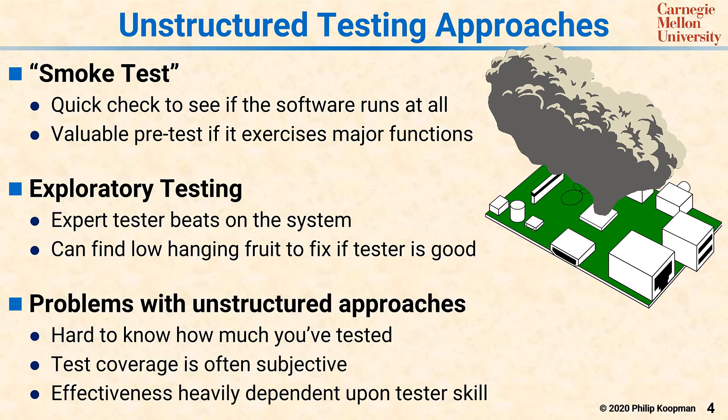The problems with these unstructured approaches are that it's hard to know how much you've tested. Test coverage — how thoroughly have you tested the system — can be subjective. The effectiveness heavily depends upon tester skill. If you have a really good tester, they may find a huge number of bugs; if you have a bad tester, they may find very few. The catch is, if you have a tester who you're not sure is good or bad, and they find very few bugs, it might be that they're a good tester and there are no bugs, or it might be that they're a bad tester and there are plenty of bugs — and it's really hard to tell the difference.